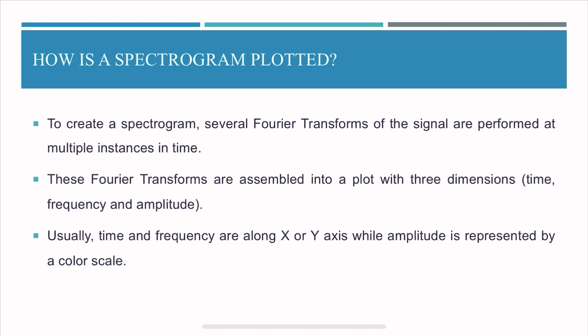So how is a spectrogram plotted? To create a spectrogram, several Fourier transforms are performed at multiple instances of time. So it is exactly same as how a spectrograph is plotted. A spectrograph is plotted by taking the Fourier transform once, but in case of spectrogram you're taking it at multiple instances of time and then you're combining all together to create a three-dimensional plot which is a spectrogram.